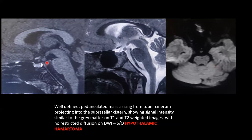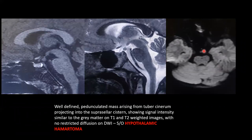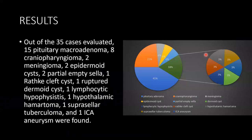A well-defined pedunculated mass arising from the tuber cinereum, projecting into the suprasellar cistern. The lesion is iso-intense to grey matter on T1 and T2-weighted imaging with no restricted diffusion. This is a case of hypothalamic hamartoma.